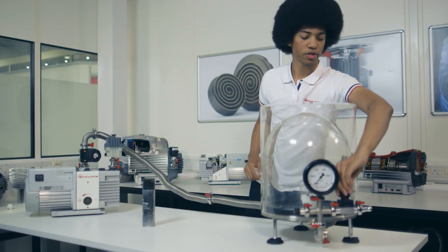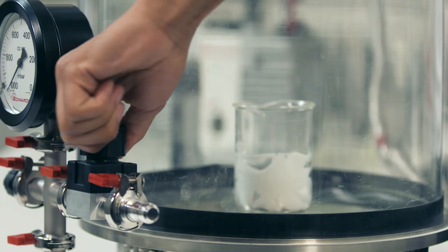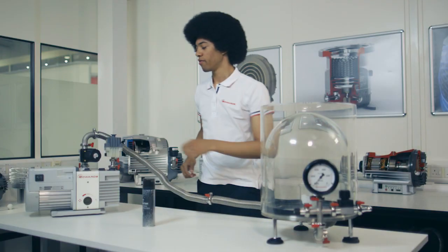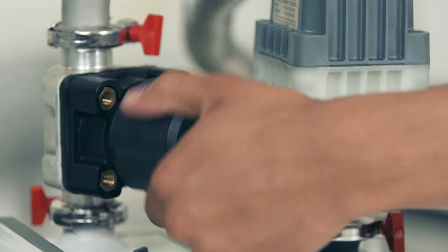I'll shut this valve to prevent any atmospheric air from entering the bell jar and then I'll open this valve to allow the pump to start removing air from the bell jar.